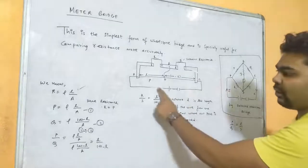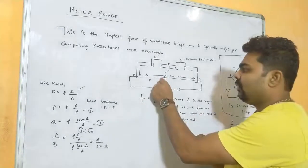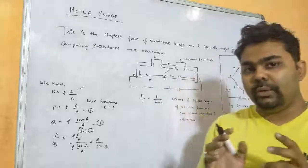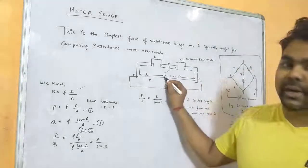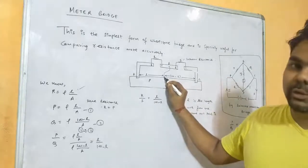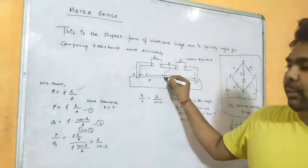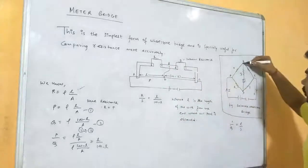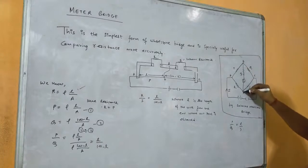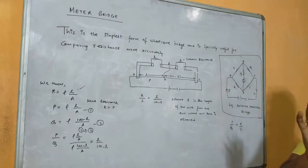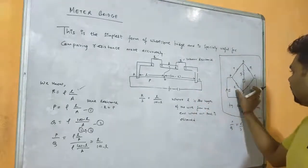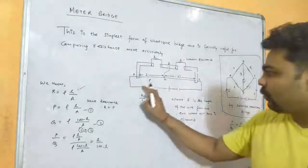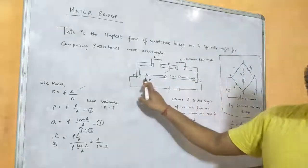When we place a jockey on the wire and slide it, at a certain point we get the null point, meaning this is a potential divider showing zero deflection. At the null point, the two bridge points are at the same potential and no current passes through. The series pairs are in parallel with each other, giving R/S = P/Q = l/(100 - l).